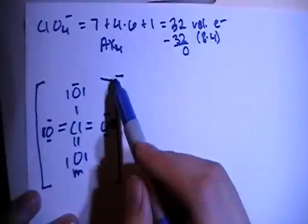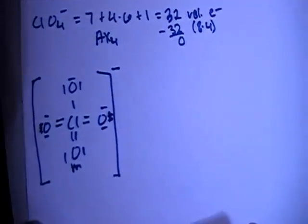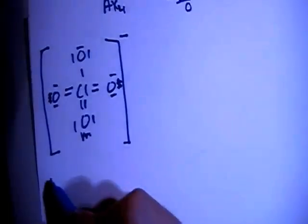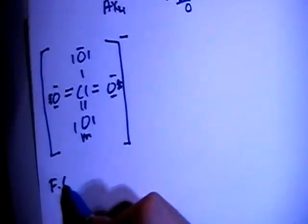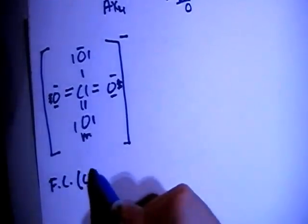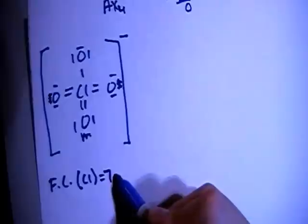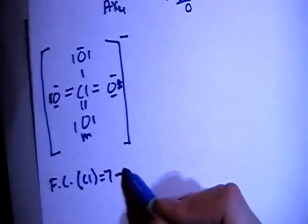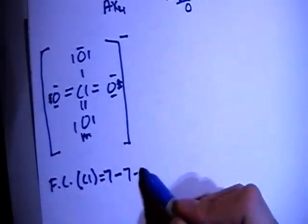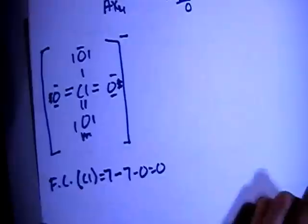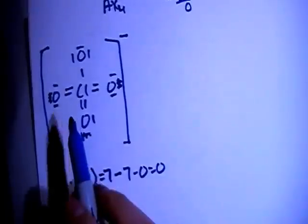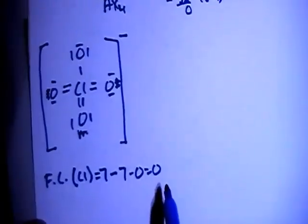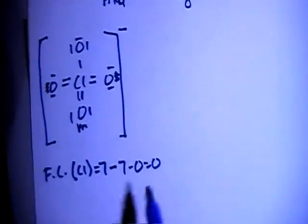Don't forget to add the brackets with the minus 1 charge, because it's an ion. Let's check the formal charges. The formal charge of chlorine is 7 valence electrons brought in, minus 7 bonds, minus 0 non-bonding electrons, which equals 0. If we had left all single bonds, this would have ended up being a plus 3 formal charge, and that's not what we're looking for.